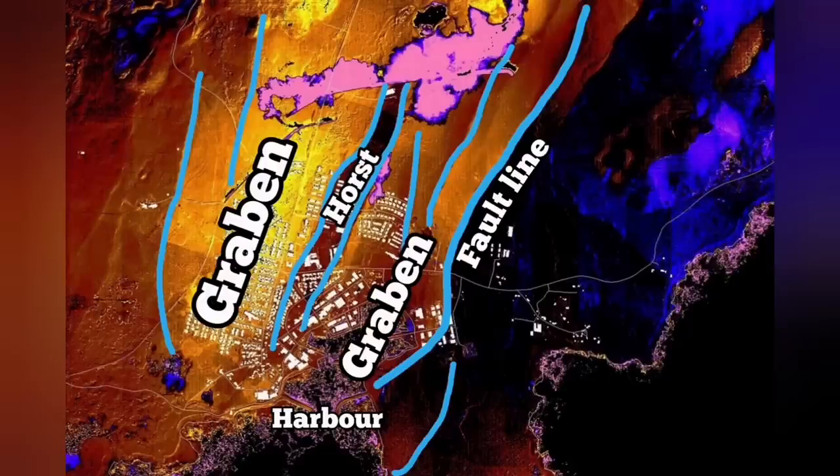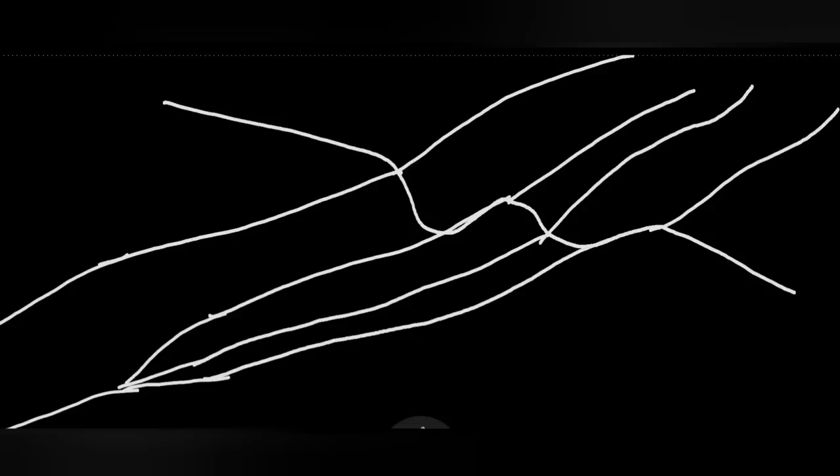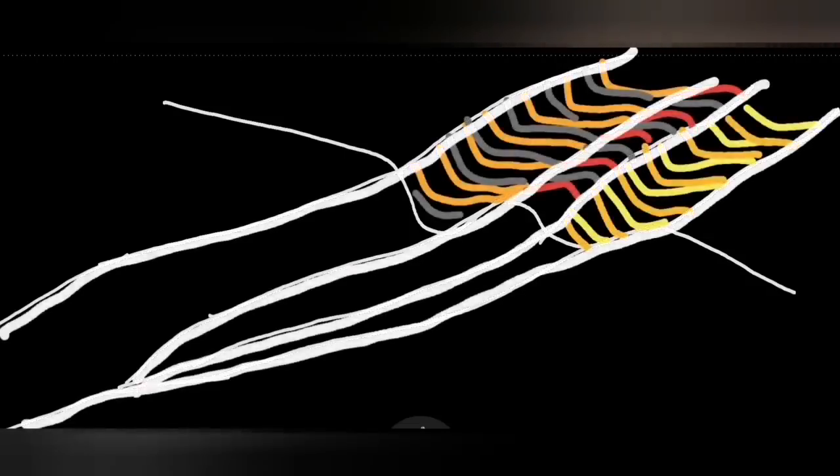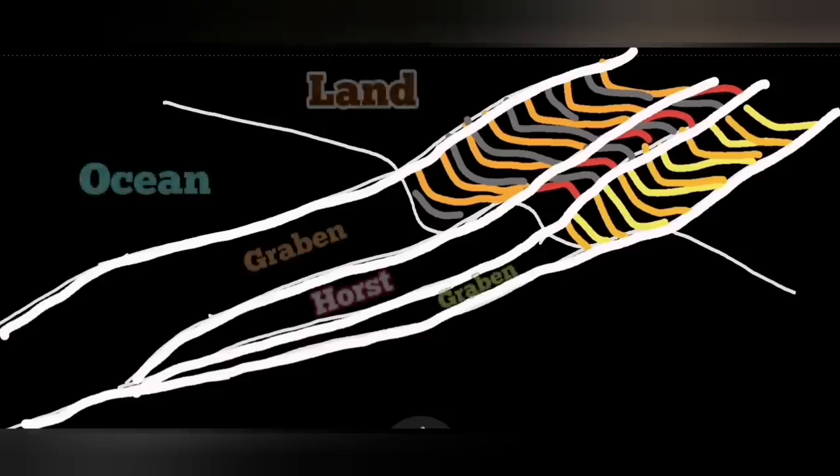This is now going to change it seems. Off the shore of Grindavík, in the harbor and toward the ocean, we have the continuation of this horst and graben. This is practically a rift, a rift valley.